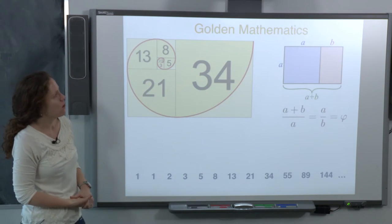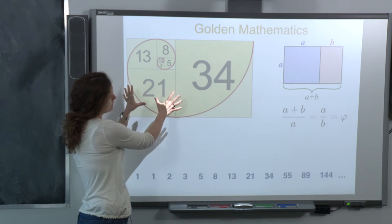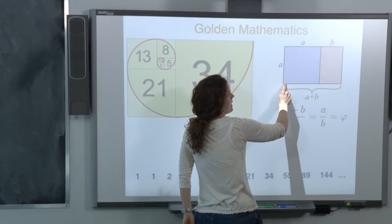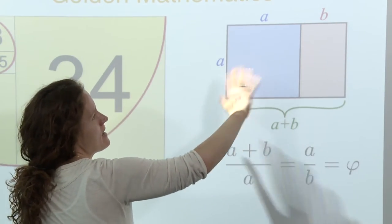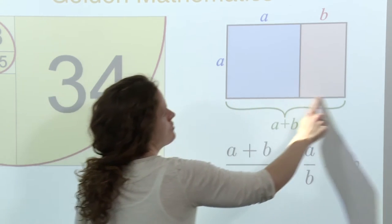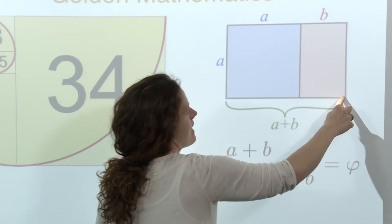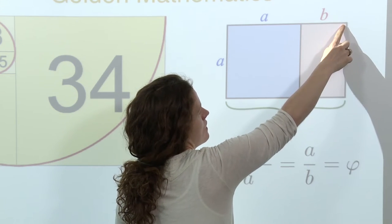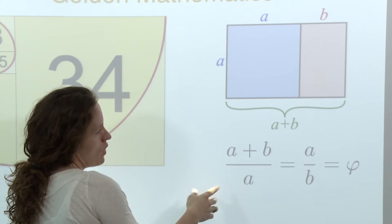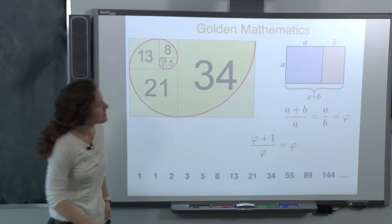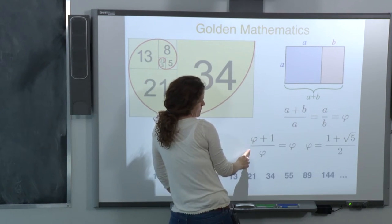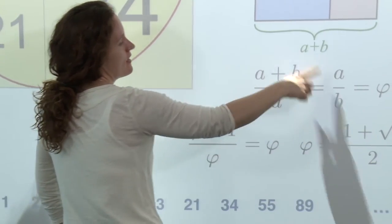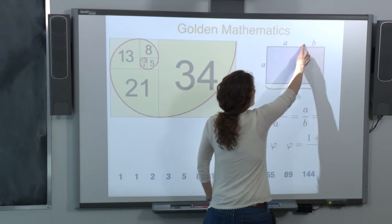The Fibonacci numbers are very closely related to something called the golden ratio in mathematics. Consider a rectangle with side length a and the other side a plus b. We want to choose a and b such that the large rectangle with sides (a plus b) and a is similar to the smaller rectangle with sides a and b. That sets up an equation. If we impose the condition that b equals 1 and substitute phi for a, we get an equation expressing this geometric similarity condition.